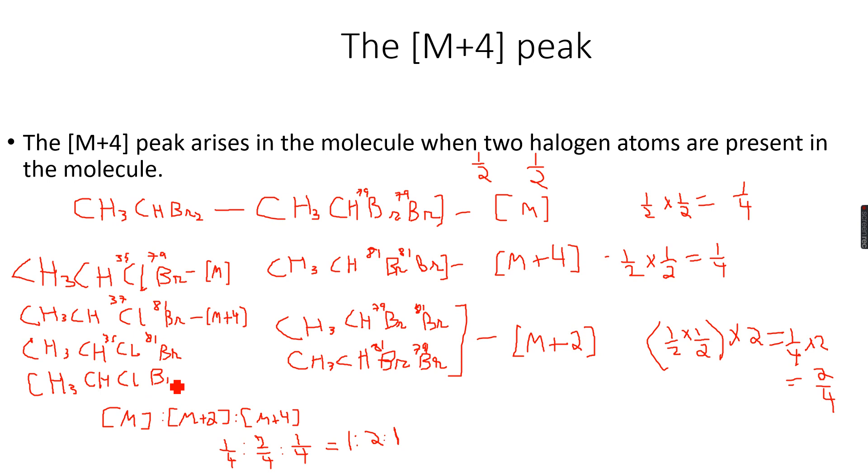Cl, Br - so this time this can be my heavier isotope and this can be my lighter isotope. Here my Chlorine was the lighter one and Bromine was the heavier one. This time the Chlorine is the heavier one and Bromine is the lighter one.